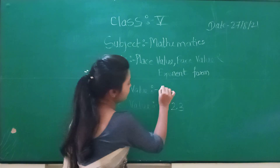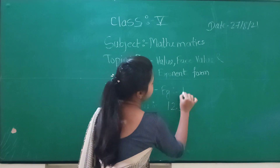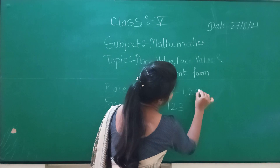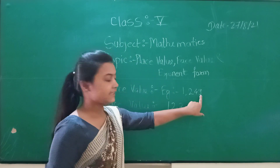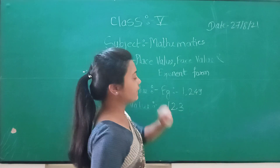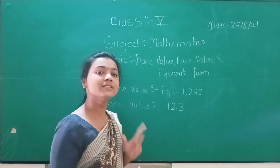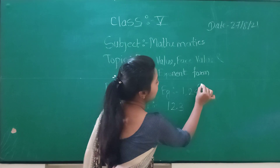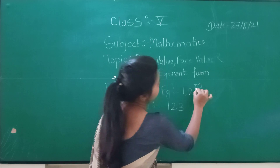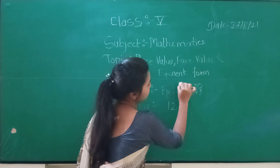Another example of place value is 1249. The place value of 9 is 9. The place value of 4 is 40. The place value of 2 is 200. And the place value of 1 is 1000. So 9 is in the 1's place, 4 is in the 10's place, 2 is in the 100's place, and 1 is in the 1000's place.